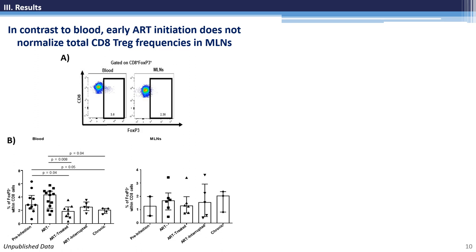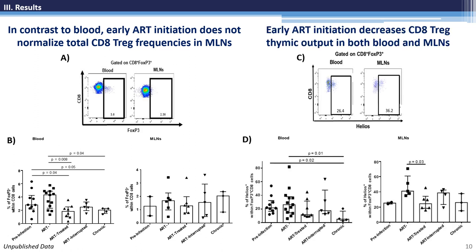This T-reg accumulation could directly impact immune dysfunction and viral persistence within the mesenteric lymph nodes. To evaluate the origin of CD8 T-regs and to explain the differences in CD8 T-reg dynamics between blood and mesenteric lymph nodes, we assessed the expression of Helios as a specific marker of thymic-derived T-regs. SIV infection increased thymic-derived output of CD8 T-regs, which was normalized by early ART initiation in both blood and mesenteric lymph nodes. This result suggests that CD8 T-reg accumulation within the mesenteric lymph nodes is due to their local differentiation.